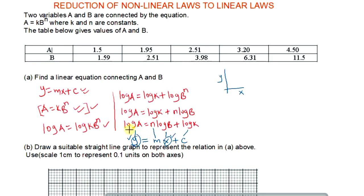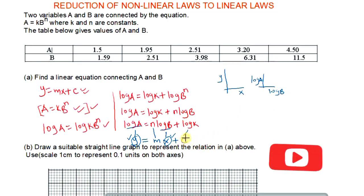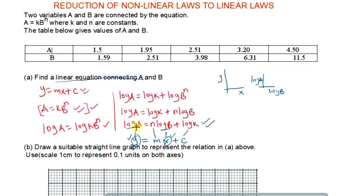For our case, we will have logarithm of a as the dependent variable and logarithm of b as the independent variable, so when we plot we will simply plot logarithm of a against logarithm of b. The linear equation connecting a and b is therefore: logarithm of a equals n log b plus log k.